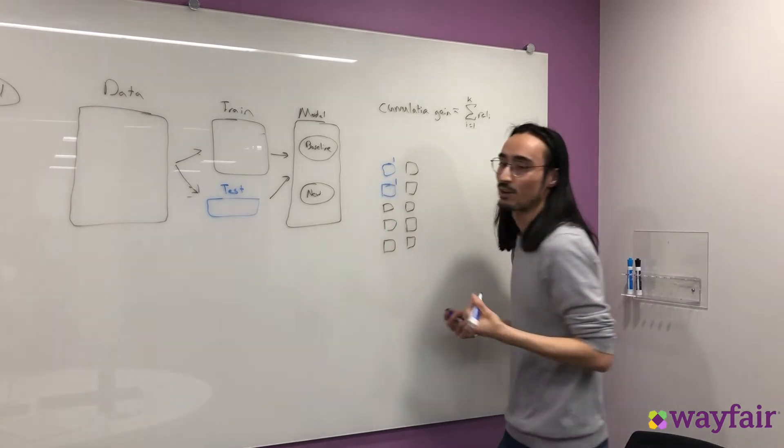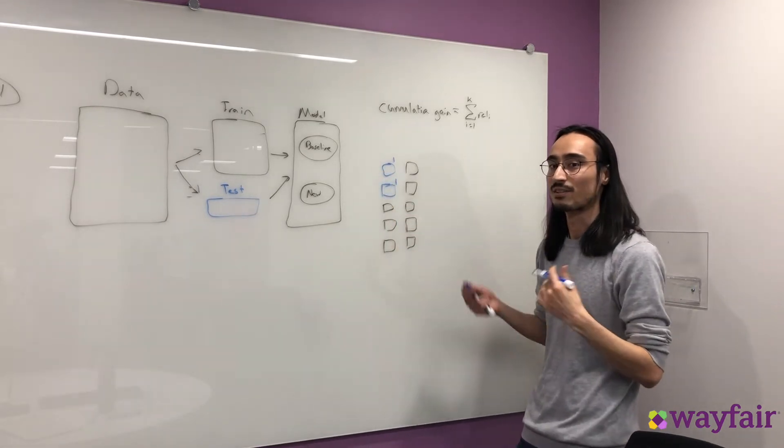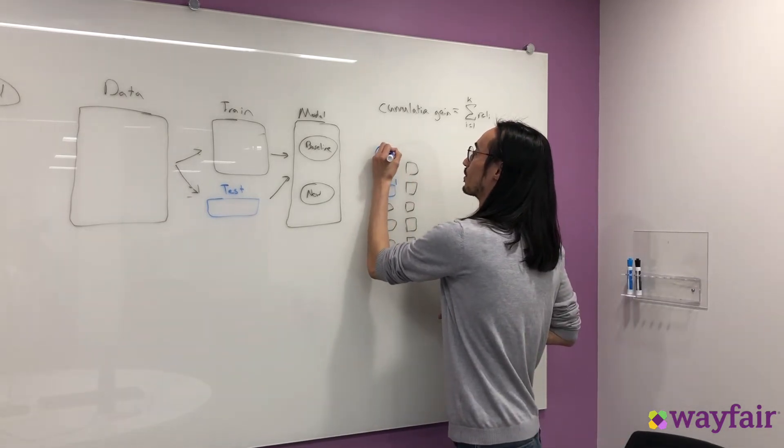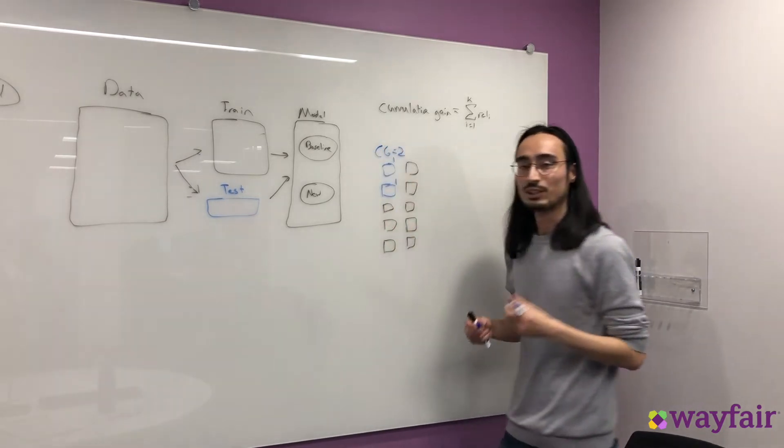And for the product at position 3, it's also 1. And for the rest of the products, they're 0. And then when we take the sum of all these relevance scores, we get a cumulative gain equal to 2.